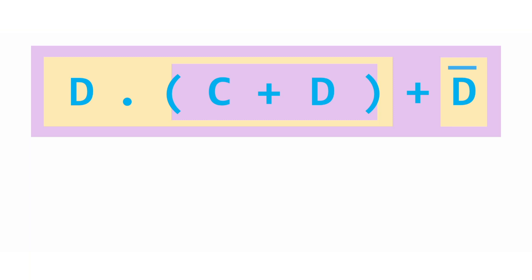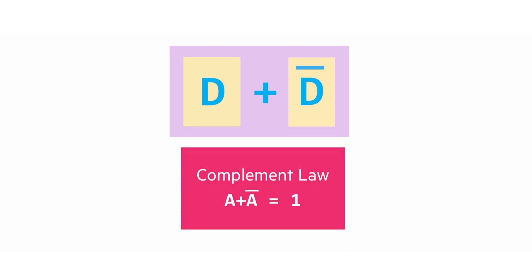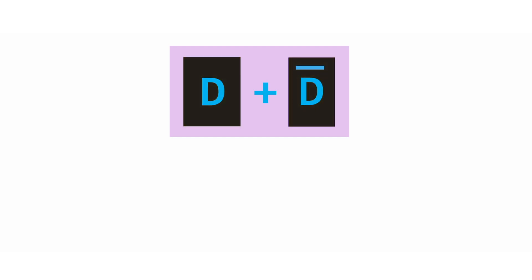Shocking absolutely no one, the absorption law is present. D and C or D in brackets is simplified to the repeated term, that's D. So the entire expression becomes D or not D. This should ring a bell. No, it's not Shakespeare, it's the OG complement law. Anything or not itself becomes one, so that entire expression is just one.